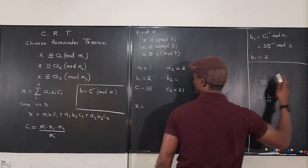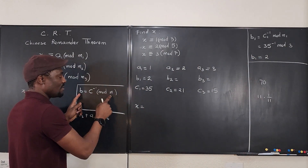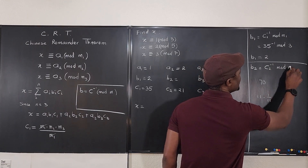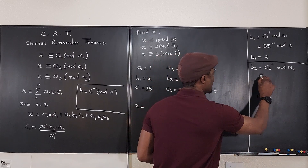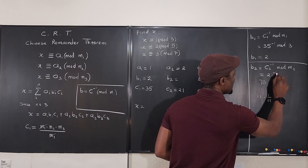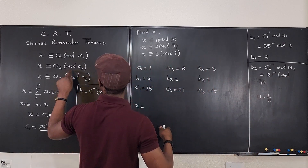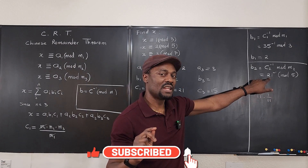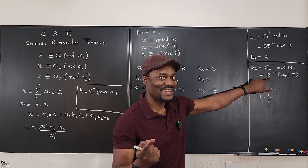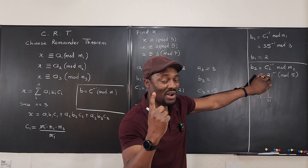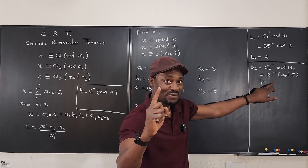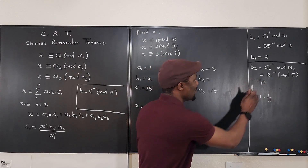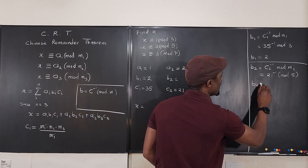For b₂, we need the inverse of c₂ mod m₂ — the inverse of 21 mod 5. We need to find what to multiply 21 by so the answer leaves a remainder of 1 when divided by 5. Notice that 21 itself divided by 5 is 4 remainder 1 — so multiplying by 1 works immediately. Therefore, b₂ = 1.